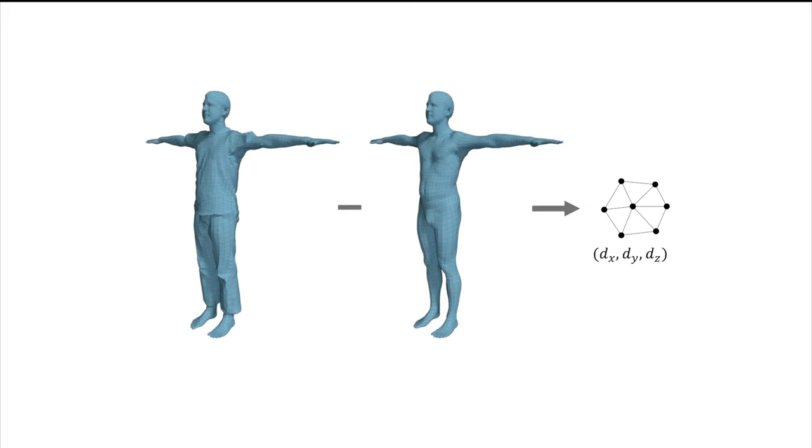We represent clothing as an offset layer from the 3D body. Formally, this layer is a graph that inherits the SMPL topology, and the feature at each node is the offset vector from its corresponding vertex on the underlying body mesh.